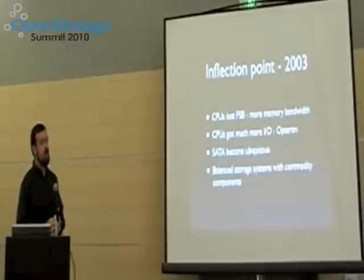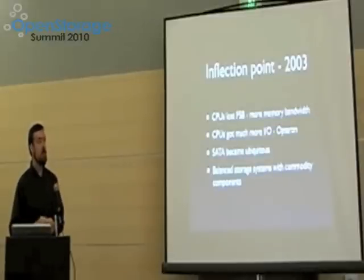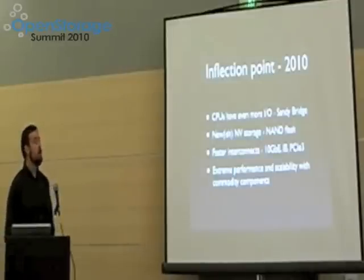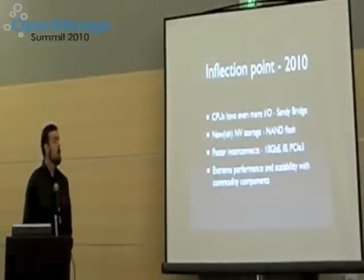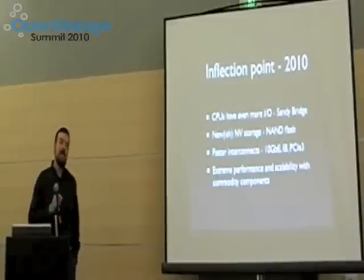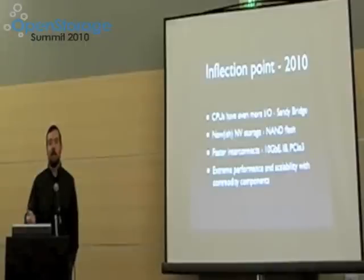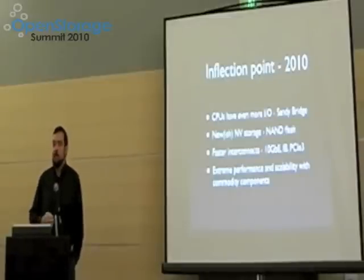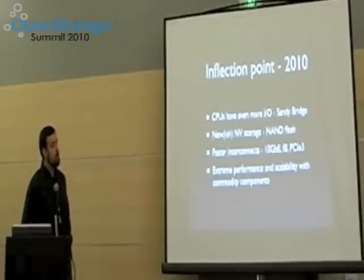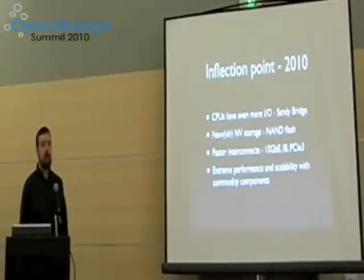That was really the last big inflection point — all those variables changing on the order of 5 to 10x from the previous generation. Now I think a very similar thing has happened in 2010. CPUs have even more IO: Intel's upcoming Sandy Bridge in a single socket is going to have 40 PCI Express Gen 3 lanes. Each lane is a gigabyte a second, so a single socket has 40 gigabytes a second of built-in IO bandwidth. In a four-socket system that's 160 gigabytes a second — just insane amounts of IO, more than a 10x difference from previous generations.